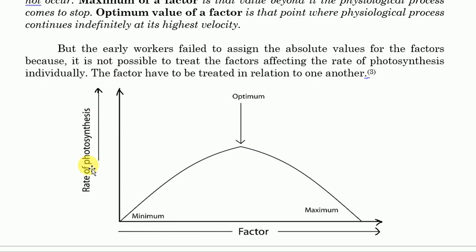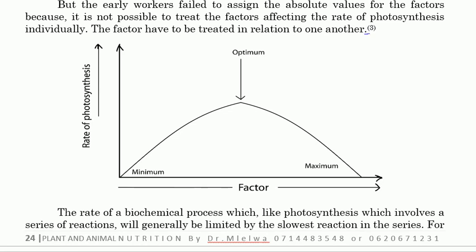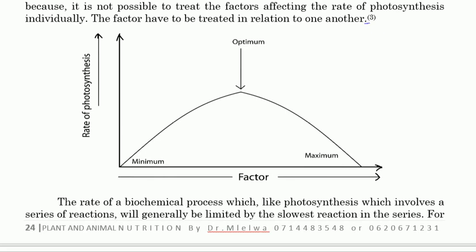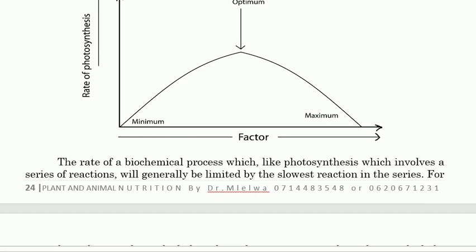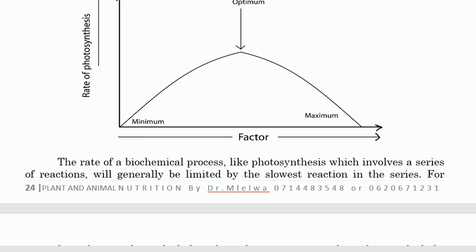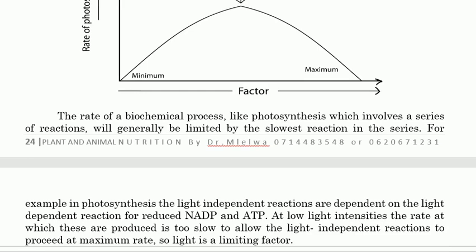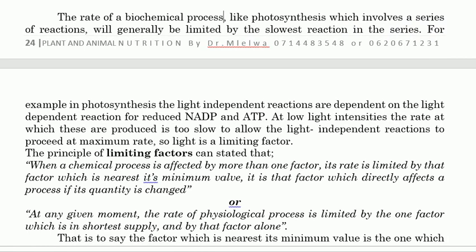Here is the rate of photosynthesis on one axis and the factor affecting photosynthesis on the other. The rate of a biochemical process like photosynthesis, which involves a series of reactions, will generally be limited by the slowest reaction in the series. That is, a biochemical reaction like photosynthesis, which has many steps, will be affected by the slowest reaction.